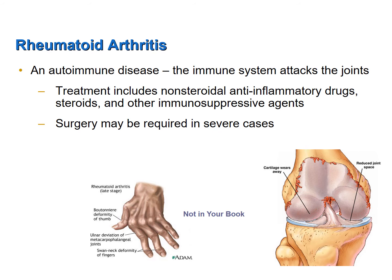Treatment for rheumatoid arthritis consists of using non-steroidal anti-inflammatory drugs like Tylenol or ibuprofen, but also includes using steroids to suppress the immune system as well as other immunosuppressive agents. In severe cases, surgery may be required to rehabilitate the joint.